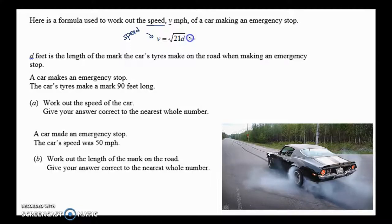What's D telling me, what's D standing for? D is feet. So D feet is the length of the mark of the car's tires when you make the emergency stop. Kind of like a skid mark. If you look at the picture here, if you make an emergency stop, you're going to make a skid mark. So talking about the length of the skid mark in feet.